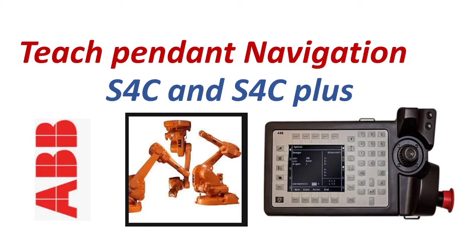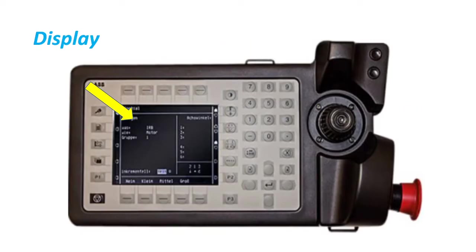Our topic for today is Teach Pendant Navigation for S4C and S4C Plus ABB Robot. The display is used to display all information during programming, to change programs, etc. It can accommodate 16 lines, and each line can accommodate 40 characters.